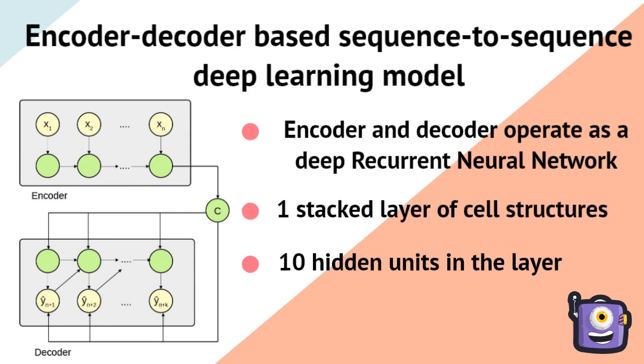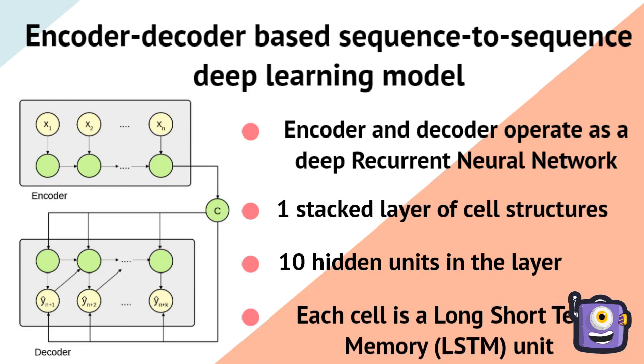The model consists of one stacked layer and 10 hidden units. Each cell in the RNN is a long short-term memory unit.